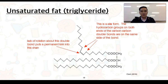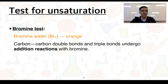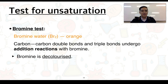This in turn affects how closely these triglyceride molecules can align with one another and therefore affects properties such as melting and boiling points. To test for the degree of unsaturation, we can use two different tests. The first is called a bromine test. Bromine water is orange in colour and it can react with any carbon-to-carbon double bonds as well as triple bonds, undergoing addition reactions. This effectively decolourises the bromine solution.